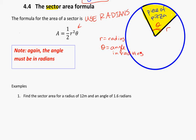Let's take a look at an example. Find the sector area for a radius of 12 meters and an angle of 1.6 radians. If we think about a picture for ourselves, radius of 12 meters and an angle of 1.6, they want to know this area, the area of all this stuff in here.